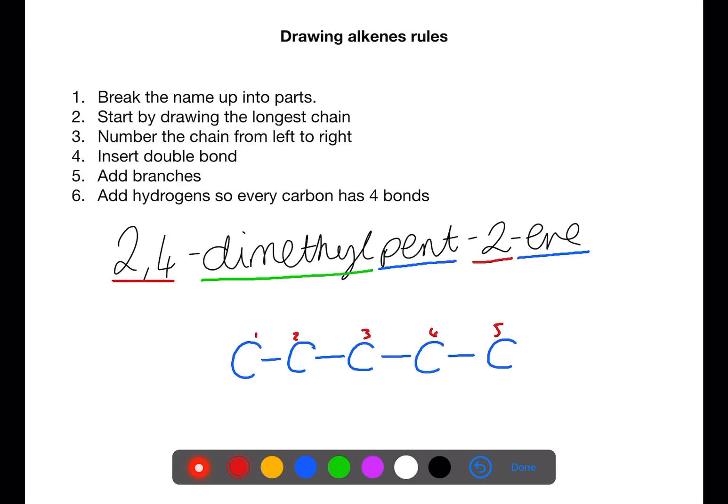On carbon 2 and 4, we also have branches. Each of these branches are methyl branches, so contain one carbon each.